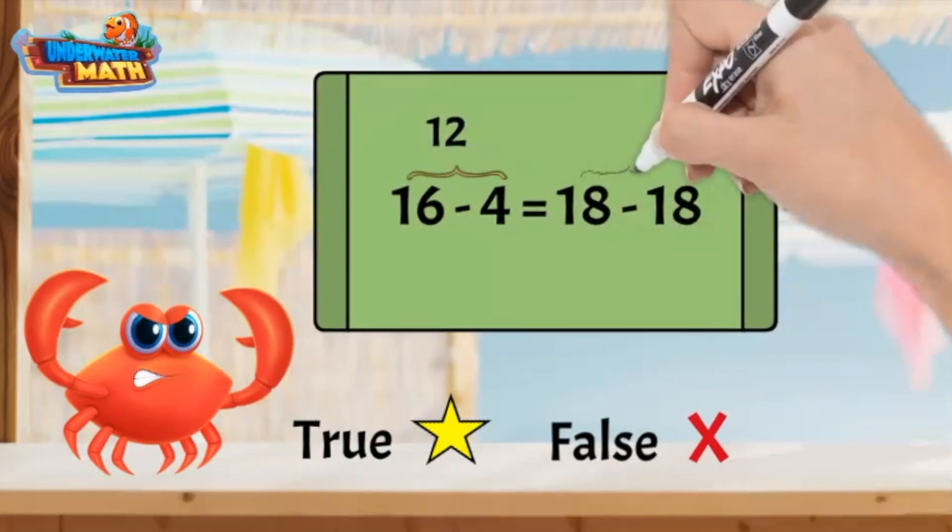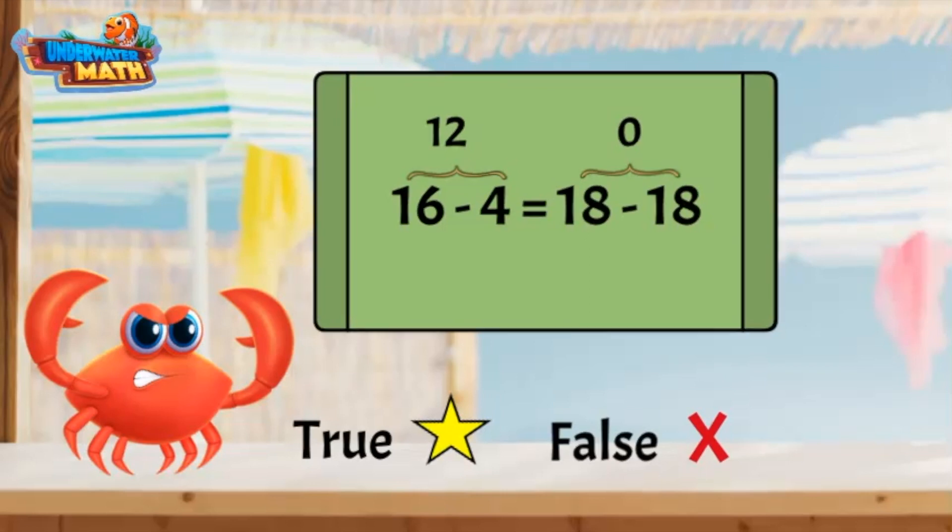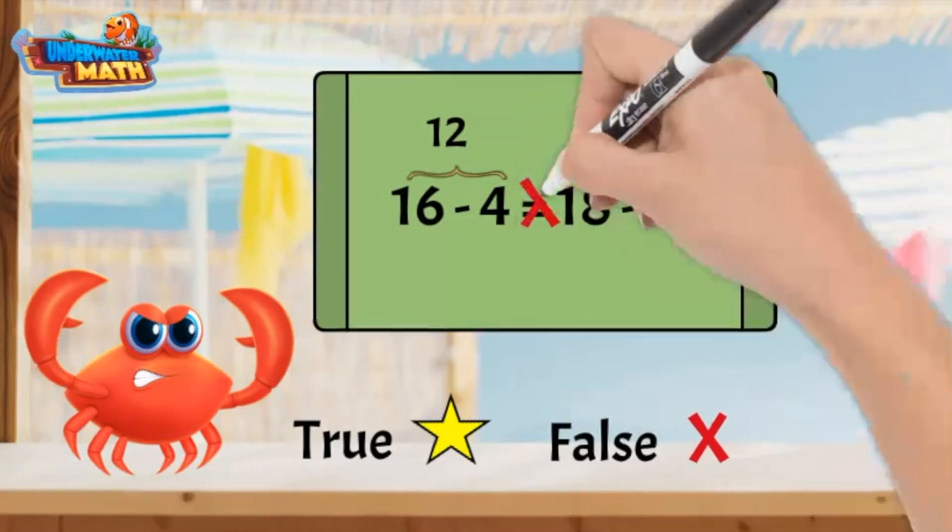16 minus 4 equals 12. 18 minus 18 equals 0. One side equals 12 and the other side equals 0. This equation is false.